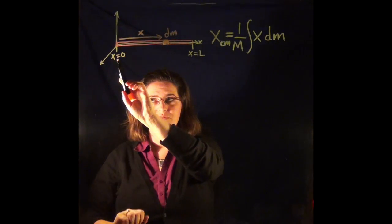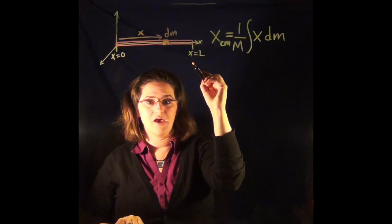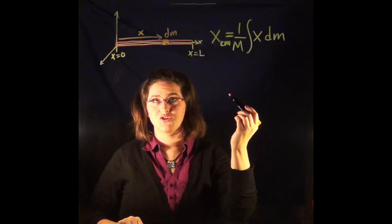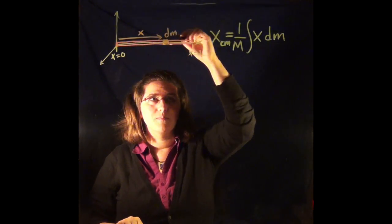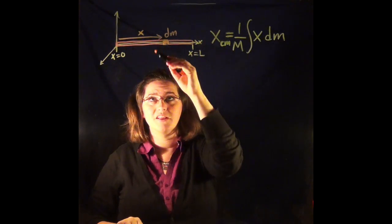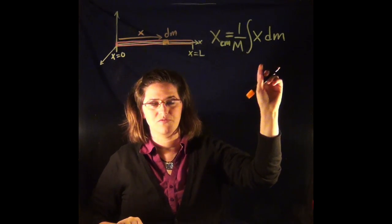Now I've got a rod starting from x equals zero going all the way to x equals L. So it's a length L long. Now we already know what the answer should be. If this is uniform mass distributed, that means that the center of mass is going to be at L over 2. But let's use the integration method to prove that.